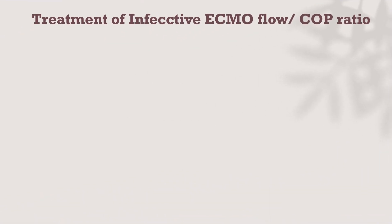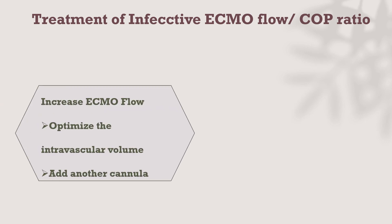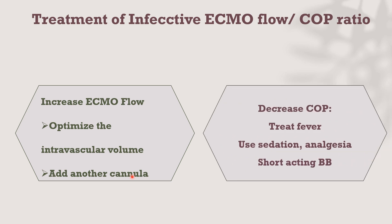The treatment targets the effective ECMO flow to cardiac output ratio. If effective ECMO flow is very low and cardiac output is high, we should increase ECMO flow by optimizing intravascular volume, increasing RPM speed, or adding another cannula if the existing cannula is small. To decrease cardiac output, we should address the underlying cause; however, using sedation and analgesia and short-acting beta blockers can also be used to decrease cardiac output.